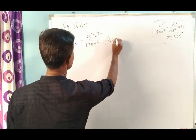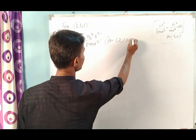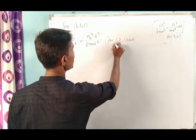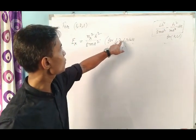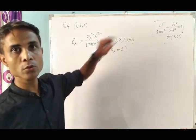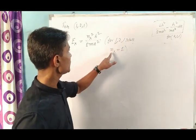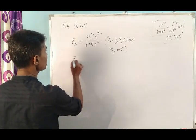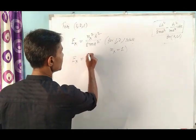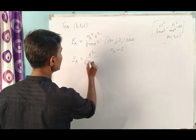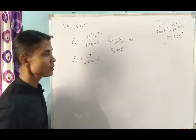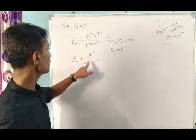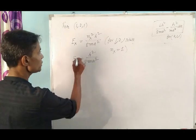For the (1,2,1) state, what is Nx? For the (1,2,1) state, Nx is equal to 1, Ny is equal to 2, and Nz is equal to 1. Since Nx is equal to 1, Ex is equal to h²A² divided by 8mA² - that is Nx² equals 1 squared. So Ex is equal to h²/8mA².